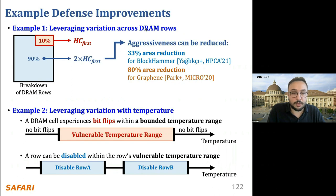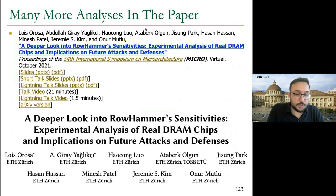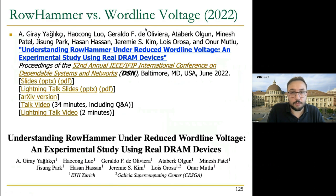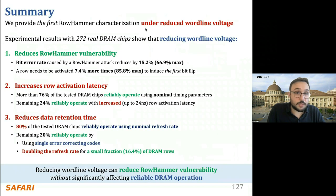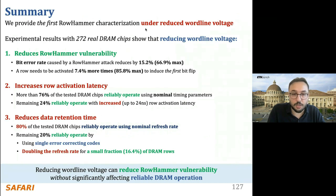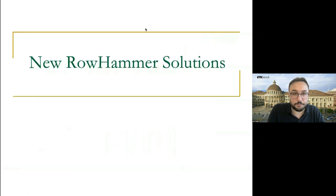We can leverage variation with temperature to retire or temporarily disable DRAM rows that are vulnerable to RowHammer at the current operating temperature. We also published a paper at DSN 2022 showing RowHammer vulnerability sensitivity to wordline voltage. Reducing the wordline voltage reduces RowHammer vulnerability at the cost of increasing row-activation latency and reducing data retention time. However, our analysis shows these parameters already have strong guard bands, so reducing wordline voltage can reduce RowHammer vulnerability without affecting reliable DRAM operation.